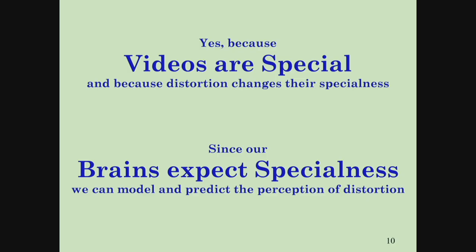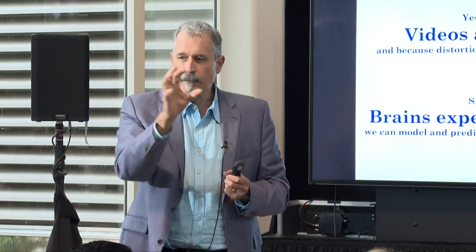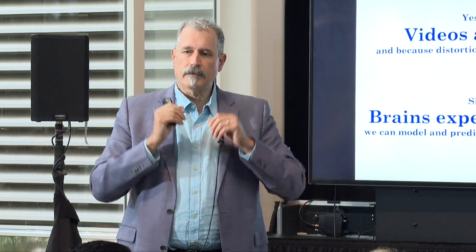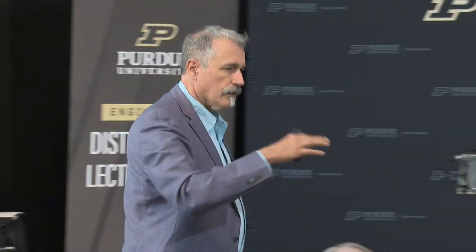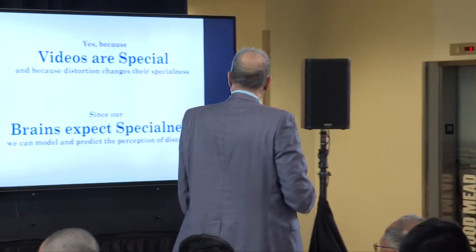The answer and the reason why we can is that videos are special — they have secrets hidden in them. They're special in certain ways that we can exploit. Because they have that specialness, and our brains have been processing visual information over time, they expect that specialness to be maintained when we see. And if that specialness is somehow broken or degraded, our brains are extremely sensitive to that. We perceive distortion instantaneously — what we call pre-attentive. If you see a blurry picture, you don't deliberate — you immediately have a perception. It's pre-attentive. It happens in just a very short period of time measured in the low hundreds of microseconds.